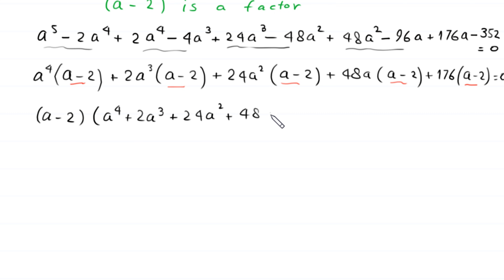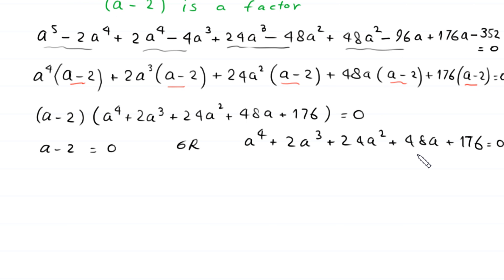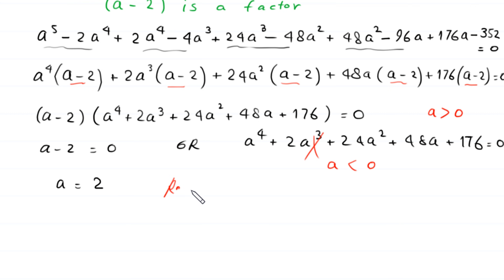So either (a − 2) = 0 or (a⁴ + 2a³ + 24a² + 48a + 176) = 0. Since a must be greater than 0 and all terms in the quartic factor are positive, the quartic equation can only hold for a less than 0 — so we reject it. Therefore a equals 2.